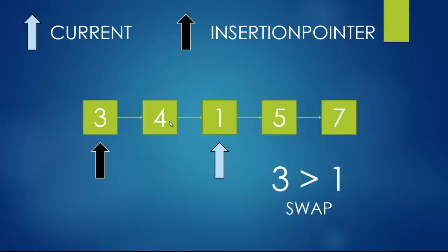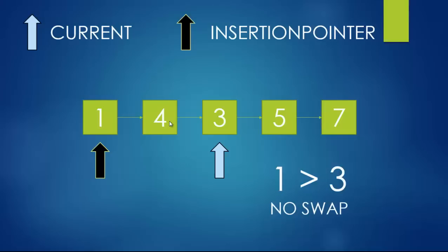Now I'm checking the insertion pointer data with the current pointer data. The insertion pointer asks: is three greater than one? It obviously is, so I have to swap the values. Then it asks again: is one greater than three? It's not, so there's no reason to swap. Next, we increment the insertion pointer by one, bringing it to four, and we ask: is four greater than three? It is, so we swap it.